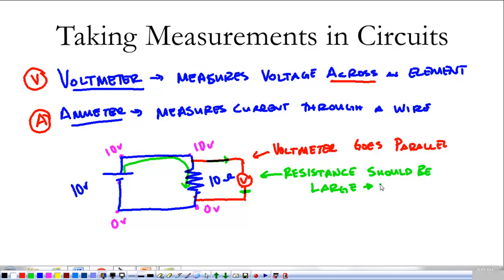So the resistance of a voltmeter, we want to be infinitely big, ideally. We don't have infinite resistance in real life, but we get huge. Okay, so a voltmeter goes in parallel, has a very large resistance.